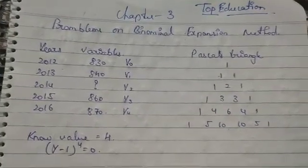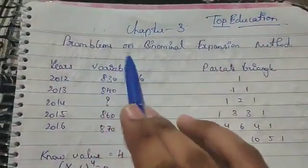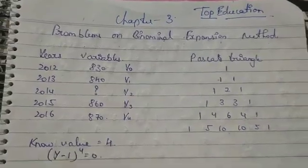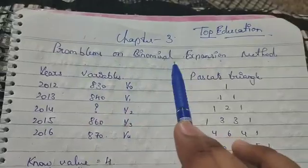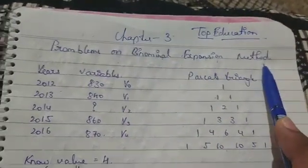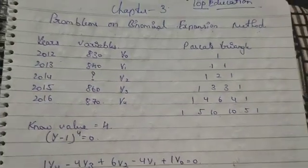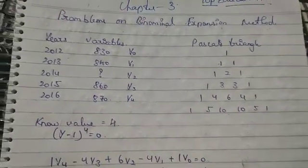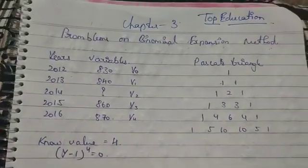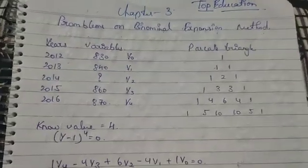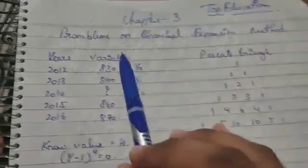Let's begin with the video. This is Chapter 3 of QA BD: problems on binomial expansion method. For what questions may come in the examination, we have made a separate video — you can go and see it. The video name is 'Important Points or Important Questions for QA BD.'